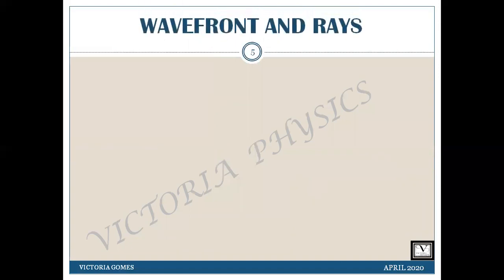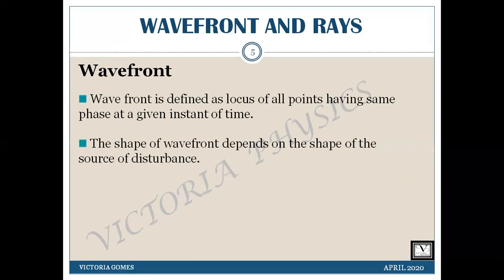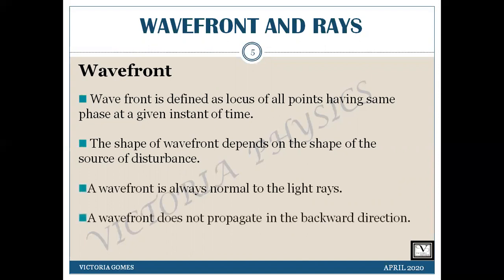Just summing up the points I discussed: wave front is defined as the locus of all points having the same phase at a given instant of time. The shape of the wave front depends on the shape of the source of disturbance. Wave fronts always move in the forward direction, and a wave front is always normal to the light rays.